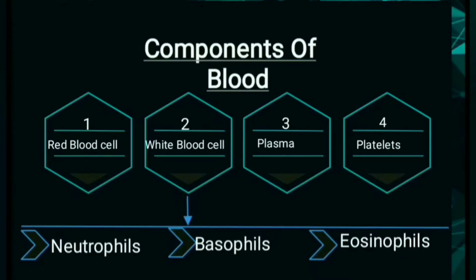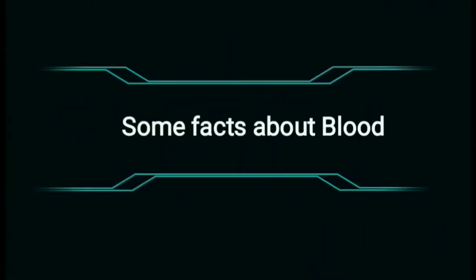White blood cells are of three types: the first one is neutrophil, the second one is basophil, and the last one is eosinophil. Now some facts about blood.